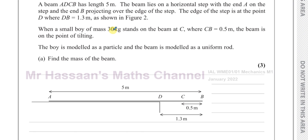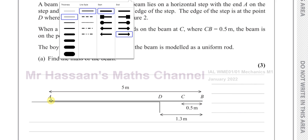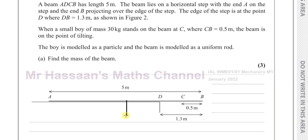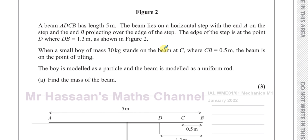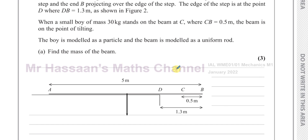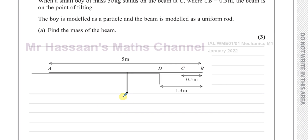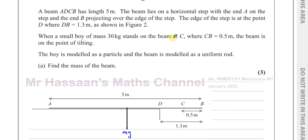First of all, we have a uniform rod with a length of five metres, so its weight is going to act exactly halfway along its length. When it's a uniform rod, the weight acts exactly at its geometric centre — so exactly 2.5 metres from the end. The weight is mg newtons, where m is the mass of the rod which we have to find. There is also a boy standing at C.